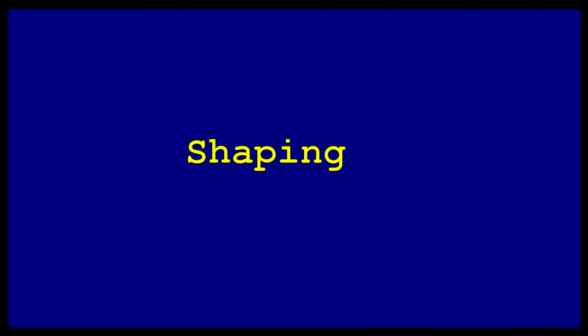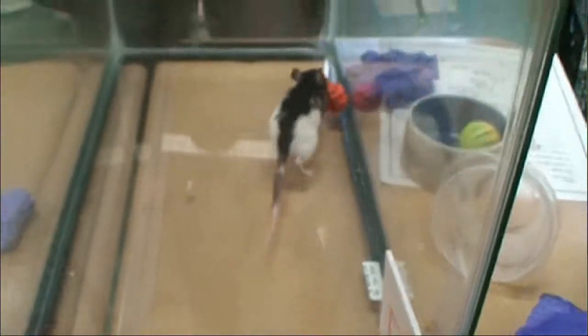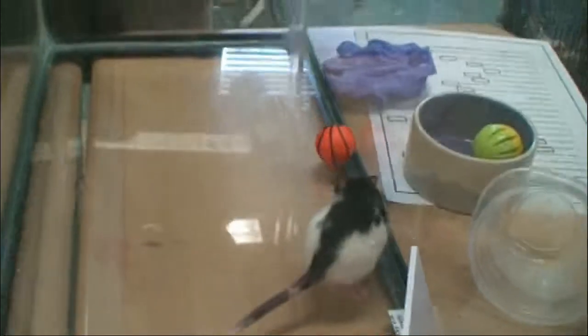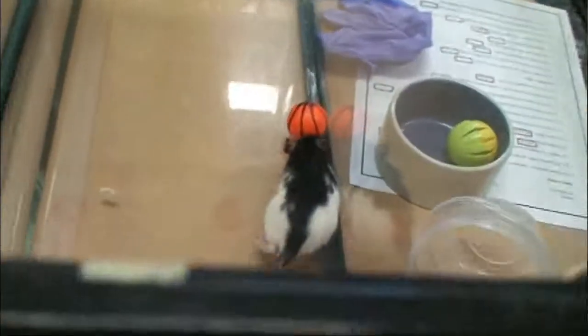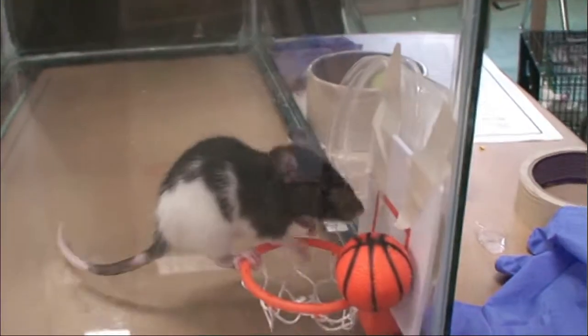Shaping: step-by-step rewards until the final goal is met. An example in this video would be the rat learning step-by-step how to play basketball.